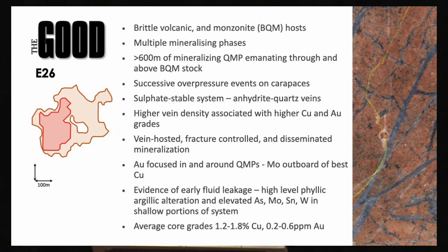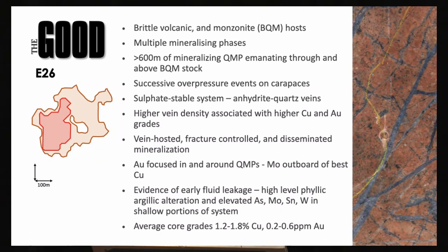In this environment you can see the evidence of overpressure: stockwork quartz-bornite veining. Whatever porosity and permeability is there has been enhanced by that breakage, allowing more fluid pathways and more chances for fluid-rock interaction and sulphide deposition. Most mineralisation is in or around the vein — think the vein as a fluid superhighway with arterial roads surrounding it. Molybdenum occurs distal and outboard to our best copper, forming a neat concentric shell.